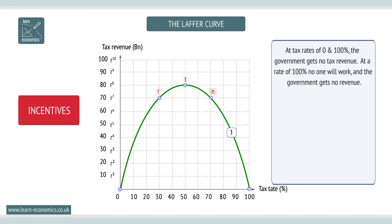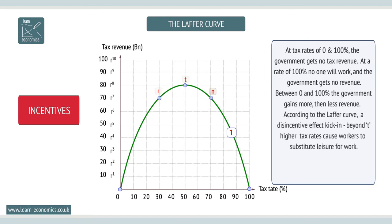According to the Laffer Curve, a disincentive effect will kick in beyond T tax rate caused by workers substituting leisure for work.